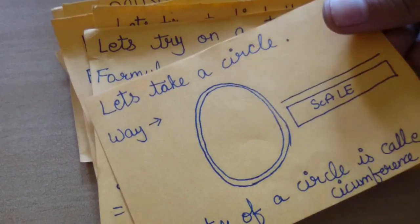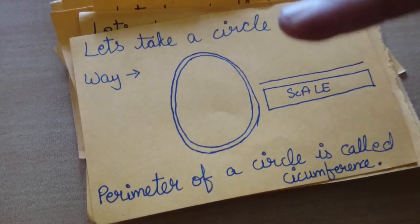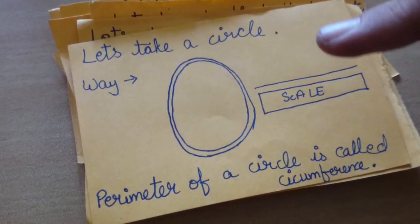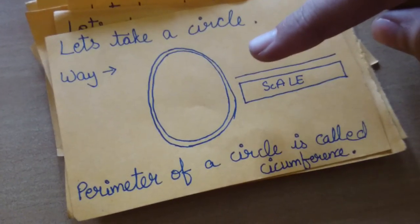Let's take a circle now. There is no special formula for finding the perimeter of a circle, but there's a specific way. Move a thread around the boundary of the circle.